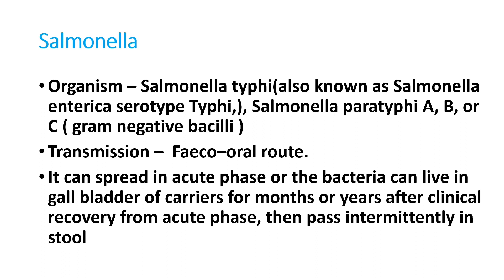Transmission is mainly via the feco-oral route. Bacteria come out through the feces of an infected person, contaminate the water source, and another person ingests them. The bacteria then colonize inside the intestine and spread to the blood. It can spread in the acute phase, or bacteria can live in the gallbladder as carriers for many months and years.